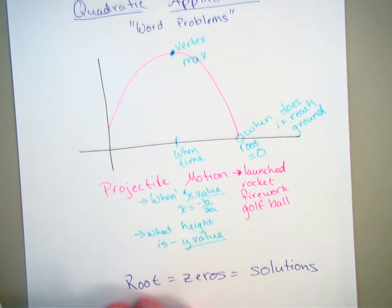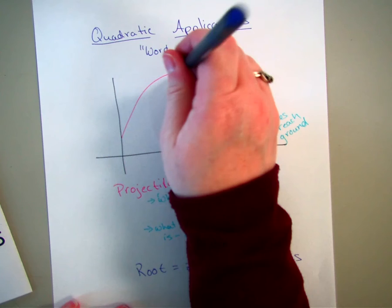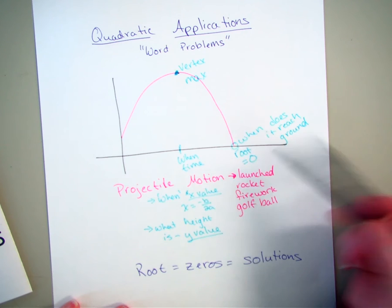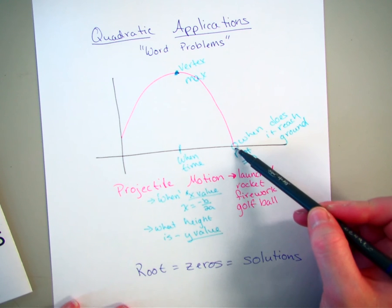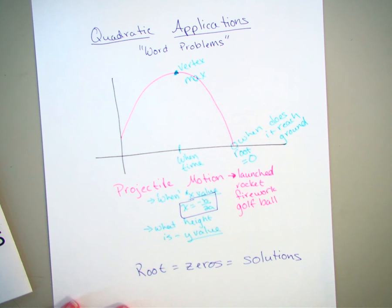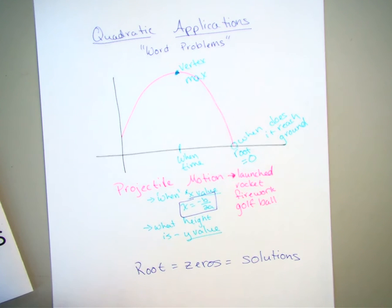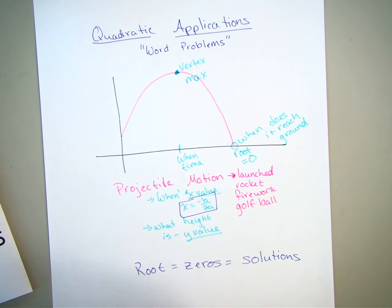So those are our quadratic applications. You're looking for one of two things. You're either looking for your vertex or you are looking for your root. So again, if you're looking for your vertex, we're going to start with that x equals negative b over 2a. And then to find the height of it, you just plug that x value into your equation. And that's going to tell you what the height of your object is. Sometimes they will ask you to sketch a graph, and that's when you use your calculator to help you with that portion of it.